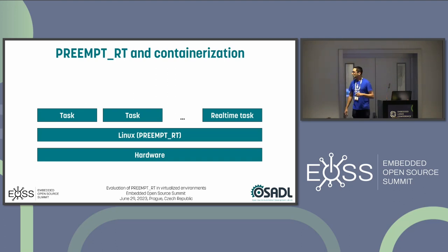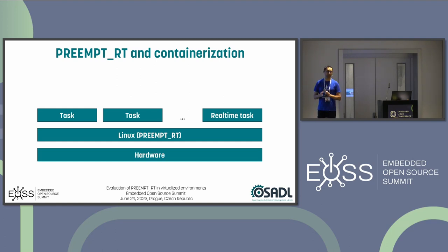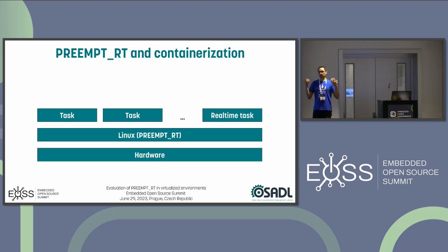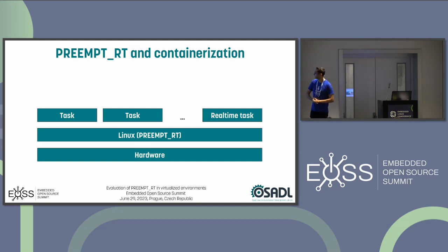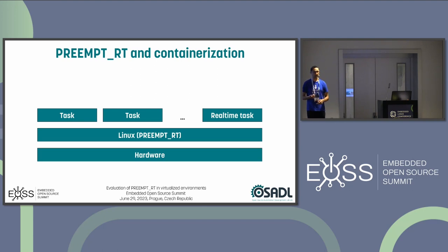We'll start with containerization. Before digging into the test setup, let's briefly recall what Preempt RT does. Preempt RT is a single-kernel approach, which makes Linux itself capable of real-time by introducing an additional preemption model: the fully preemptible kernel. A real-time task is just a standard Linux task — you work with a standard C library, standard tools, standard POSIX API. You just need to follow a few rules.